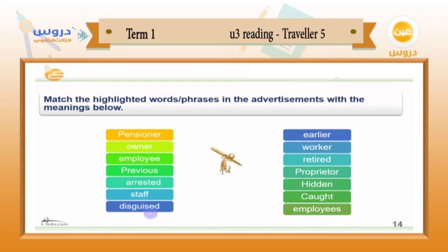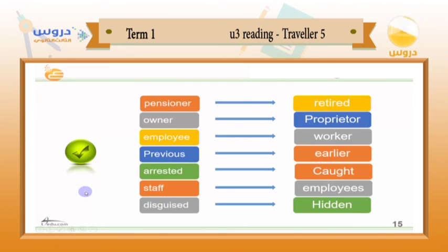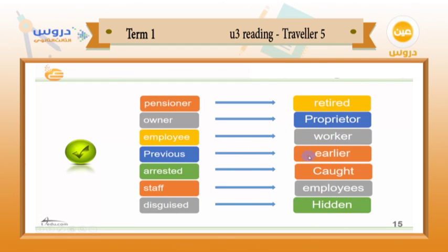For example, what is the meaning of 'disguised' — is it hidden, employees, or coat? Here are the right matches: pensioner = retired; owner = proprietor; employee = worker; previous = earlier; arrested = caught; staff = employees; disguised = hidden. Well done to those who got it right first time.